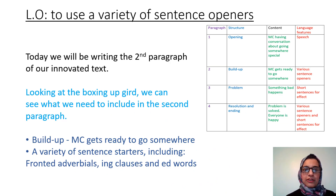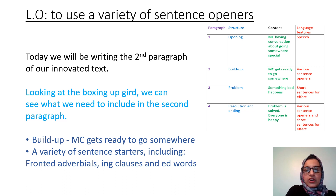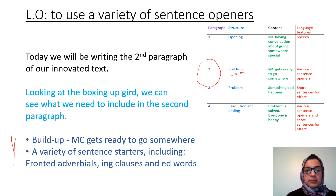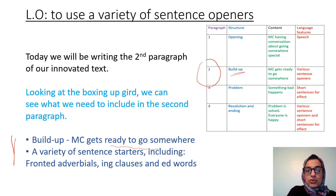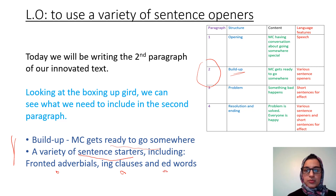Today we are writing the second paragraph of our innovative text. If you recall from Friday when we wrote the first paragraph, we are writing the story from the perspective of Toothless. If we look at the boxing upgrade, we are in the second paragraph. The content is basically the build-up — the main character Toothless has to get ready to go somewhere. As for language features, we're going to focus on using a variety of sentence starters including fronted adverbials, ing clauses, and ed words.